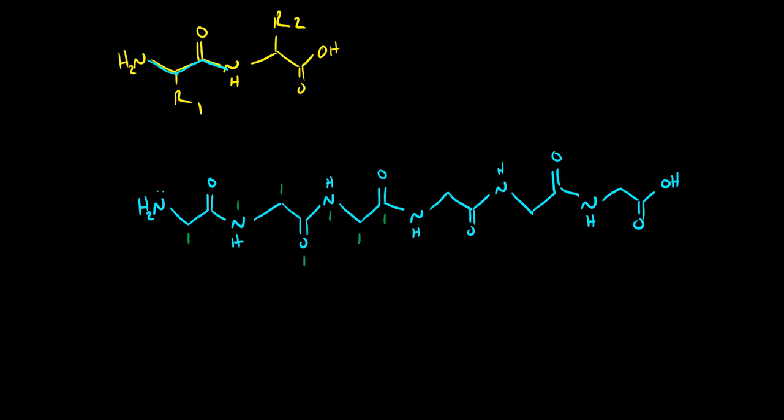So we know that each alpha carbon then has an R group or a side chain hanging off of it. So this would be R1, we call this R2, this R3. And it's only when you start adding in the side chains that the actual amino acid matters. Before you start putting in the side chain when all you're doing is focusing on the backbone, it doesn't matter what these side chains are. It's only when you determine what the amino acids are where the side chains matter.